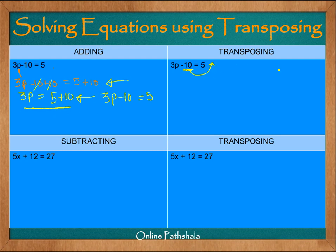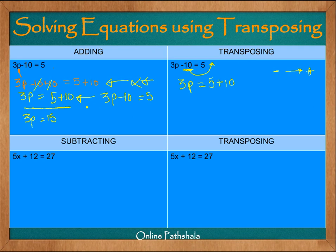In transposition, whenever you have a subtraction sign on one side and you transpose it to the other side, it becomes addition. So by direct transposing we get 3p equals 5 plus 10, which gives 3p equals 15. We got rid of the extra step and came straight to this result. That is what we mean by transposing.